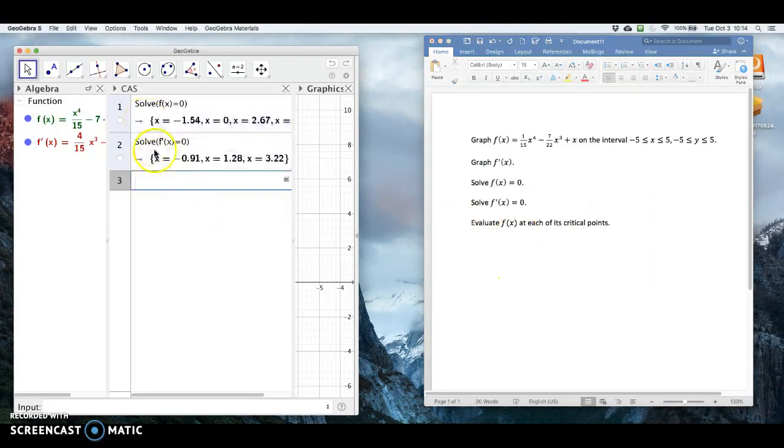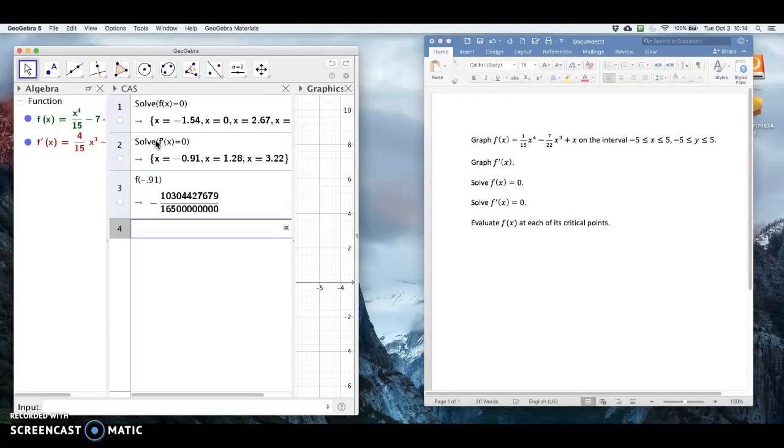Okay, so to do that, I could keep in the CAS, just type f, parentheses, minus 0.91. And if you click enter, in CAS, it's always going to try to give you a rational number, a fraction, as much as possible, but that's kind of nonsensical to us.